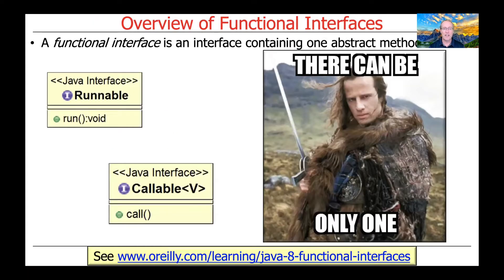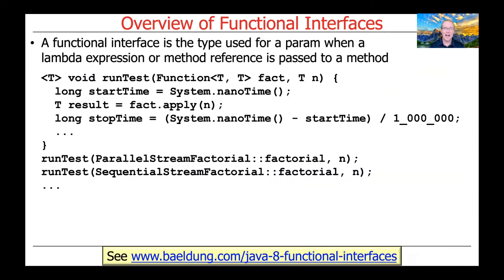A functional interface is an interface that contains just one abstract method. You've already seen examples of this if you've worked with Java for any length of time. For example, Runnable is a functional interface — it only has one method, run, and it's abstract. Likewise, Callable is also a functional interface with only one method, call. A functional interface is the type used for a parameter when a Lambda expression or a method reference is passed as an argument to a Java method.